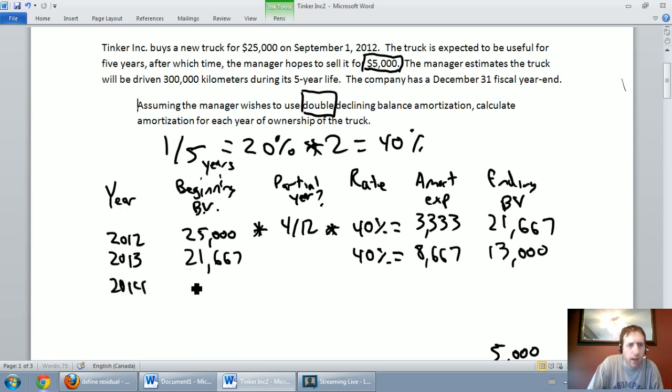In 2014, I started with an asset with a book value of $13,000. Again, it's a full year. It's not a partial year. I want to amortize it for 40%. 13,000 times 40% is 5200. I started the year with $13,000. I've reduced the asset's value by $5,200. It's $13,000 minus $5,200 is $7,800.